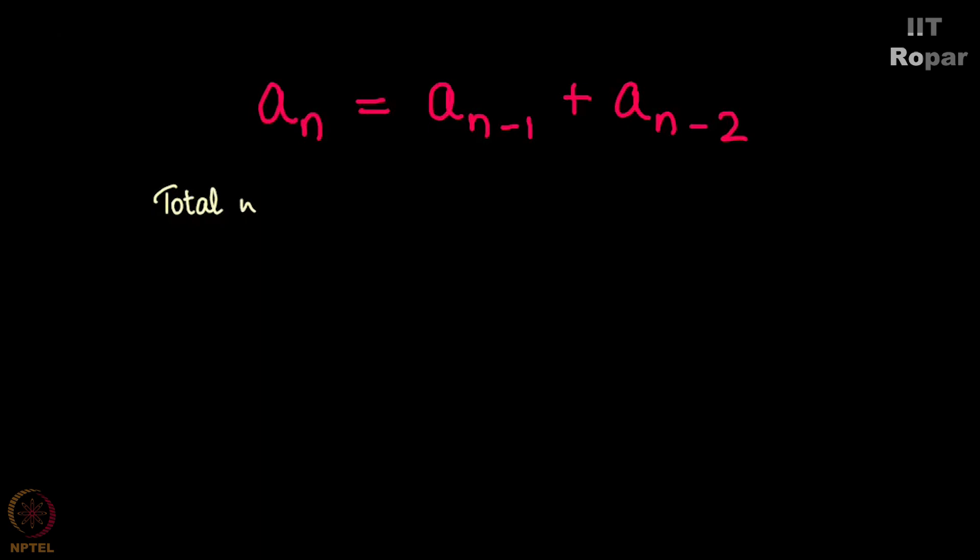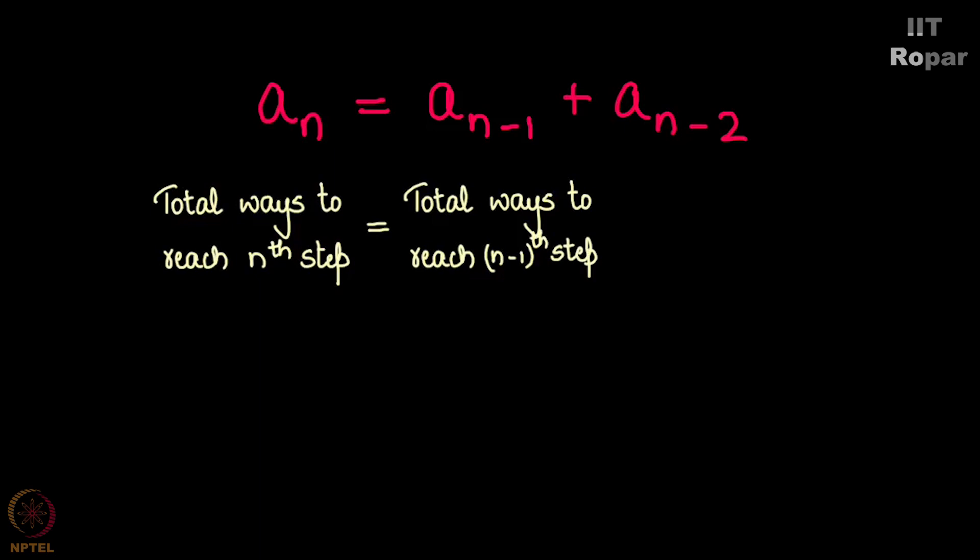The total number of ways in which you can reach the nth step is precisely equal to the total number of ways in which you can reach the (n-1)th step and take one step, plus the (n-2)th step and take a two-step jump. These are mutually exclusive events.